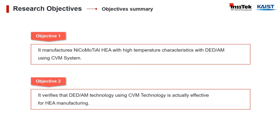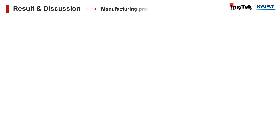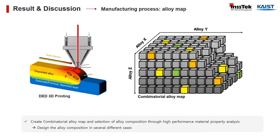Our research objectives are to produce a nickel, cobalt, molybden, titanium, aluminum high-entropy alloy using direct energy deposition additive manufacturing technology with the CVM powder-filling system, and to verify the effectiveness of the DED-AM technology using our CVM powder-filling system for HEA manufacturing. For producing these high-entropy alloy samples, we created a combinatorial alloy map and designed various composition cases to assist our experimentation.